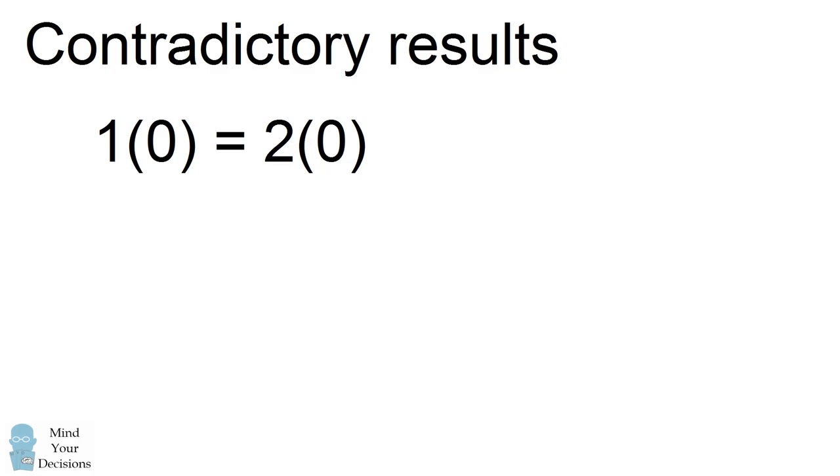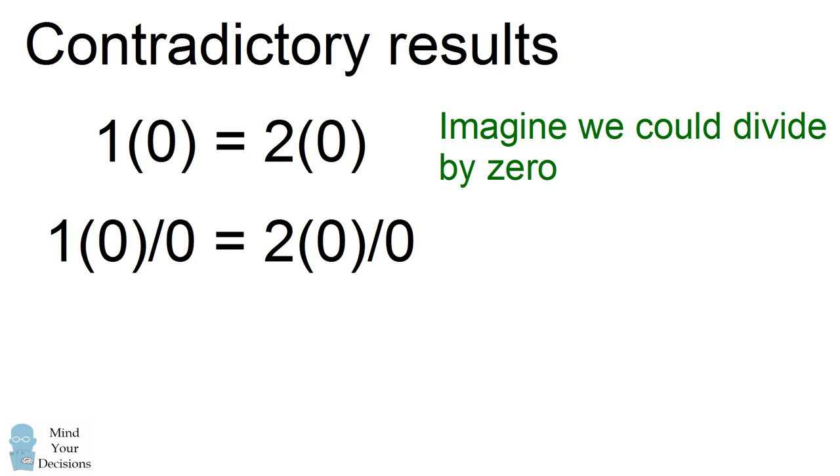We know that one times zero is equal to two times zero because any number times zero is equal to zero. If we could divide by zero the way we normally divide by other numbers or if zero had a multiplicative inverse, then we could divide this equation by zero and cancel out the zeros to find that one equals two. This would clearly ruin everything we know about mathematics and this would cause algebra to be meaningless.